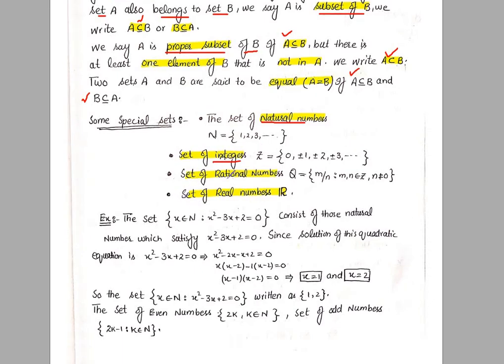Next is the set of rational numbers. We denote these by Q. The elements are of the form m/n, where m and n belong to Z and n is not equal to 0. These numbers are called rational numbers. Next is the set of real numbers, denoted by R. This set contains all numbers — natural numbers, integers, rational numbers, irrational numbers — all number sets are contained within real numbers.